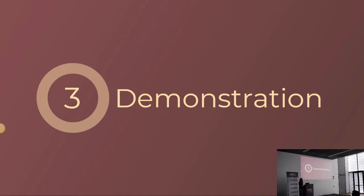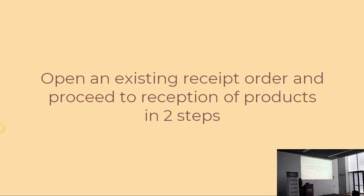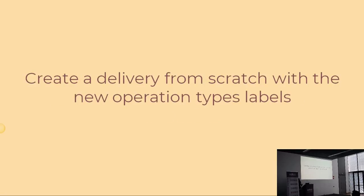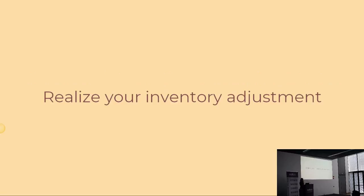What I will suggest is that we go through the demonstration. We will see different flows together. The first one will be opening an existing picking, which will be a receipt order in our case, and proceed to the reception of the different products. We will first receive them in an input location, and then move them to the stock, so that we see both the reception and the internal transfer. We will also see how to create a delivery from scratch with a new operation type label, and finally make an inventory adjustment directly from the barcode application.